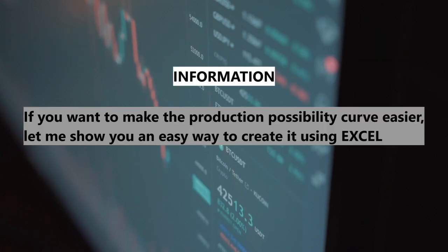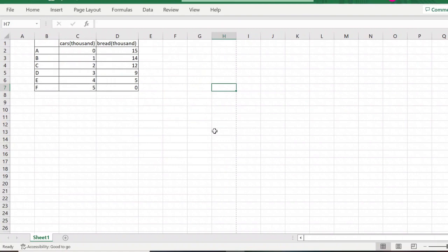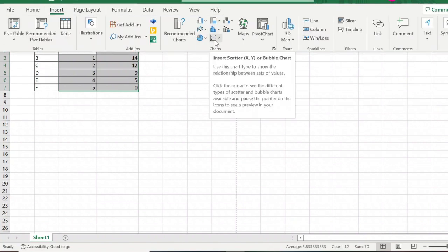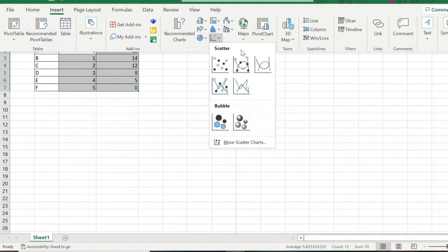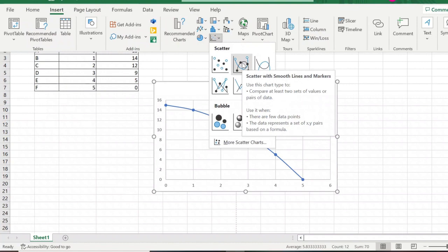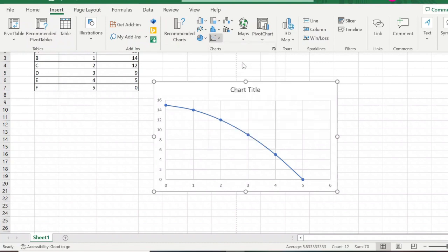If you want to make the production possibility curve easier, let me show you an easy way to create it using Excel. Now I want to show you how to make a production probability curve more easily in Excel. First, we have to block these numbers, skip the title—cars and bread, any combination A, B, C, D, E, and F. Block the numbers. After that, go to Insert and find the chart. After finding the chart, choose this: scatter with smooth lines and markers.